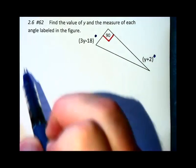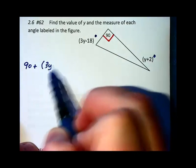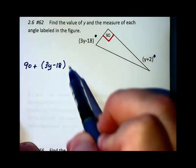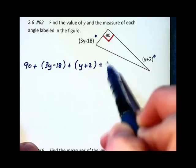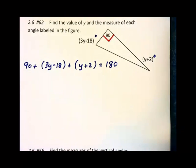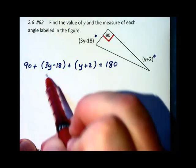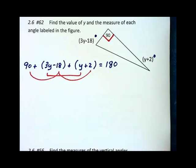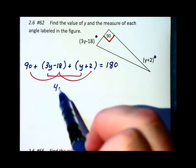In any triangle, the angles add up to 180 degrees. So we're going to have 90 plus the 3y minus 18 for one angle, plus the other angle, which is y plus 2. Those should all add up to 180 degrees. Now the parentheses that I wrote in there were just for emphasis. So I'm going to combine like terms with everything else that I see there. And let's do the y's first. 3y plus 1y makes 4y.